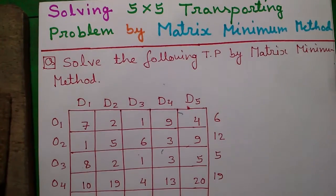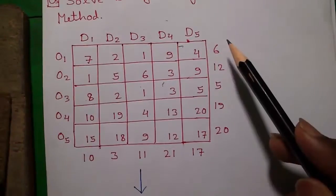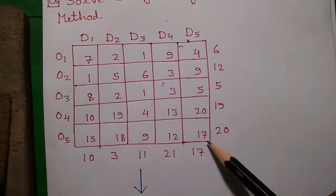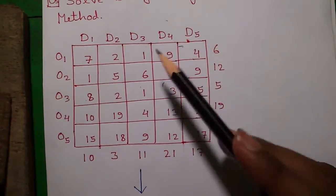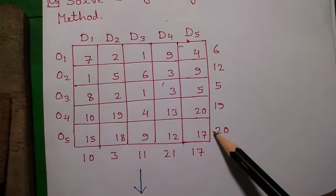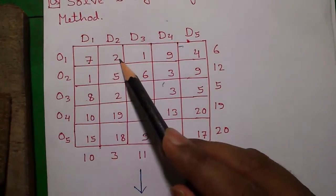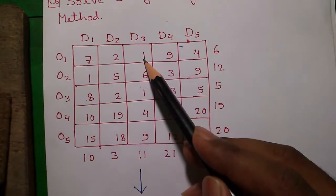This is our question: solve the following transportation problem by matrix minimum method. For some basics, this is called a transportation problem. This matrix is called the cost matrix, where each individual cell value is called the transportation cost.